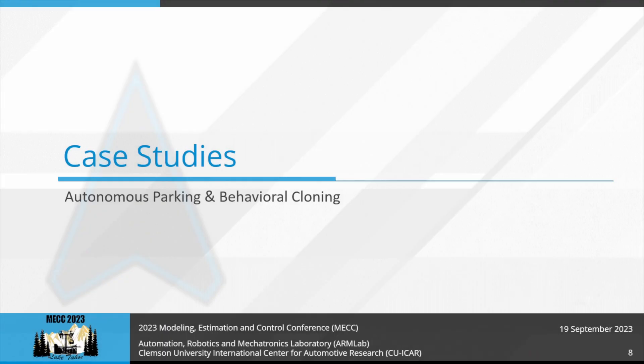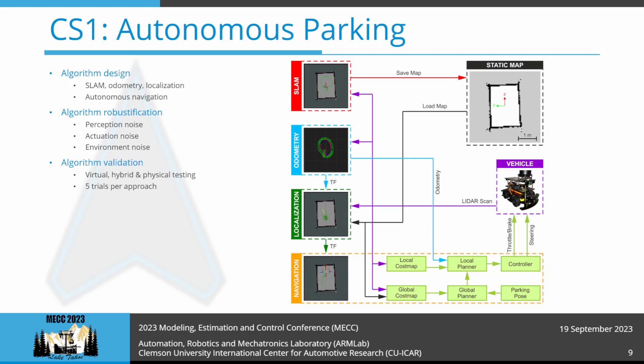We will now discuss two case studies which highlight the sim-to-real capability of the Autodrive ecosystem. The first case study is autonomous parking, implemented using the probabilistic robotics approach with LiDAR as the only sensing modality. The vehicle first mapped its surroundings using the Hector SLAM algorithm, then localized itself against this known static map using range-flow-based odometry and an adaptive particle filter. For autonomous navigation, the vehicle planned a feasible global path using the A* algorithm, while simultaneously re-planning its local trajectory for dynamic collision avoidance using the timed elastic band approach. A proportional controller generated throttle, brake, and steering commands to enable the vehicle to follow the local trajectory accurately.